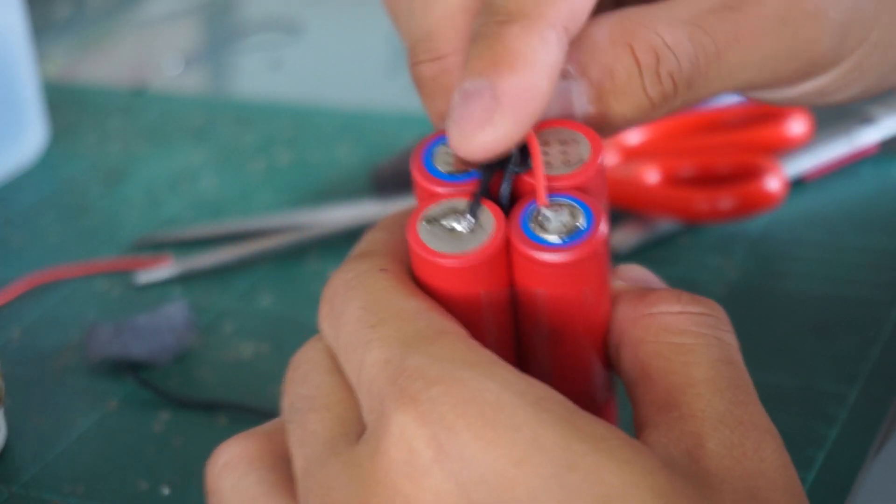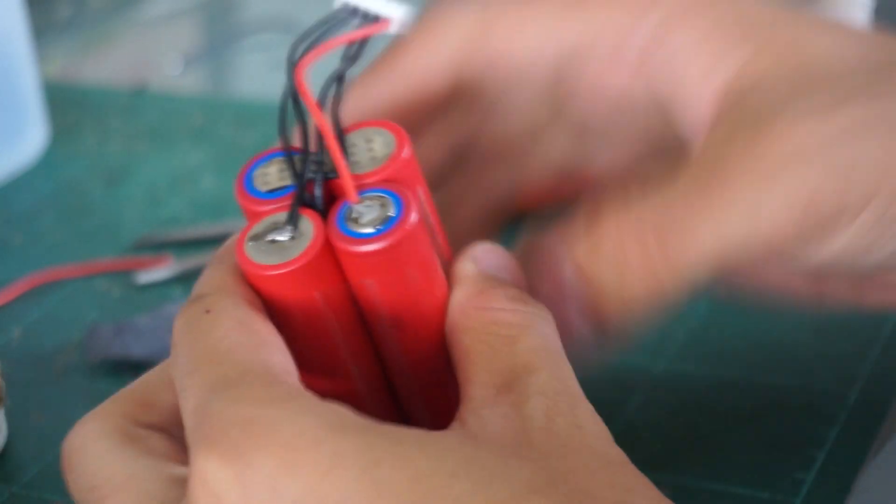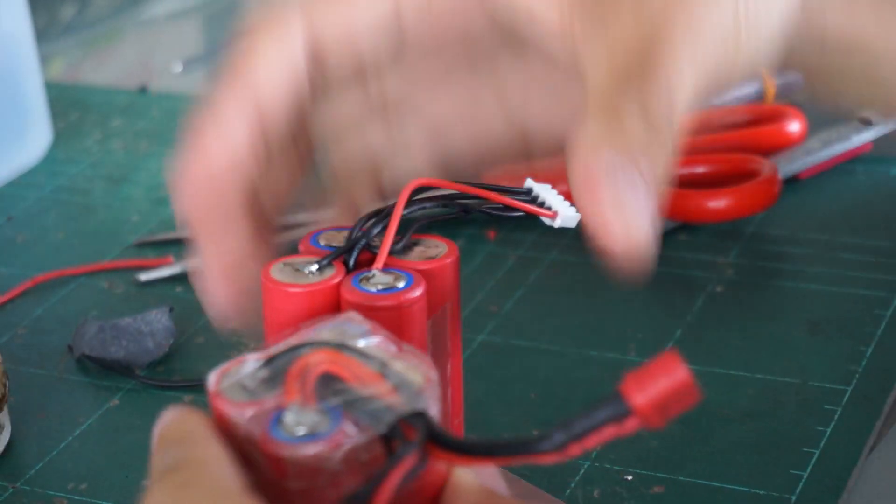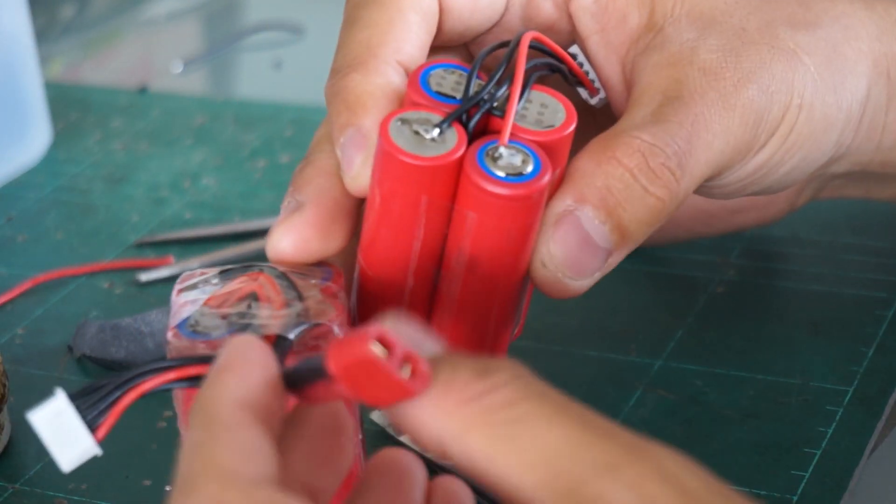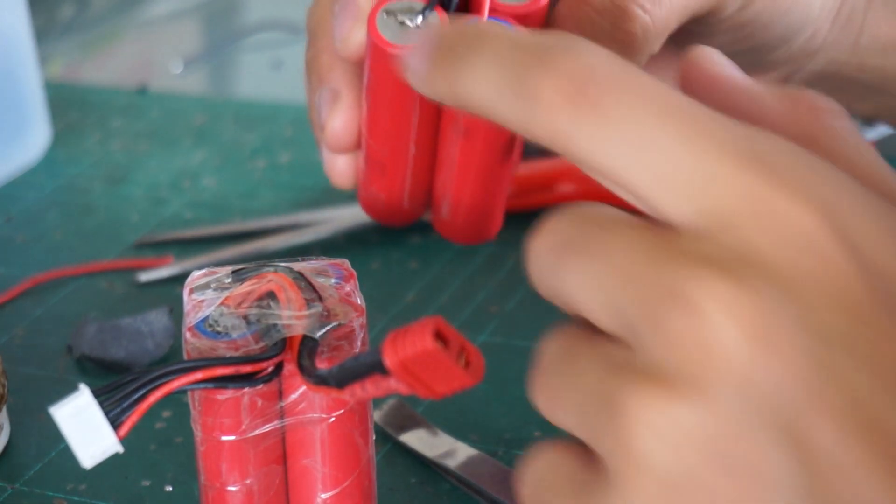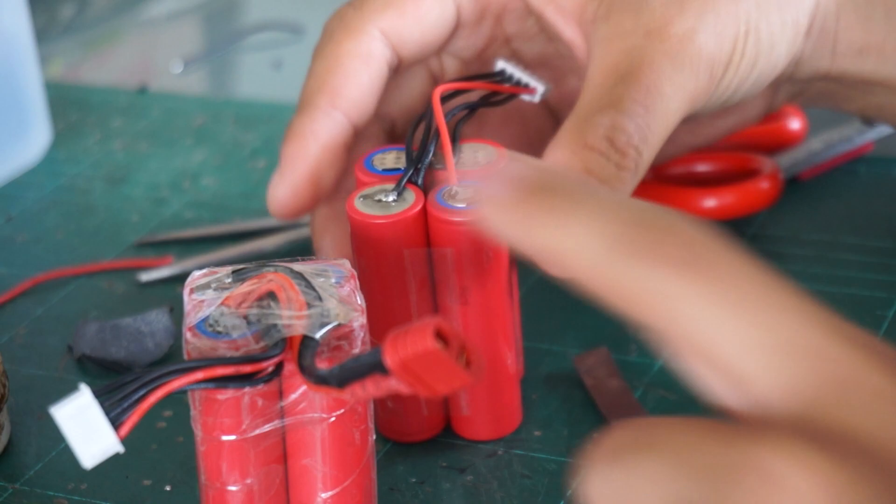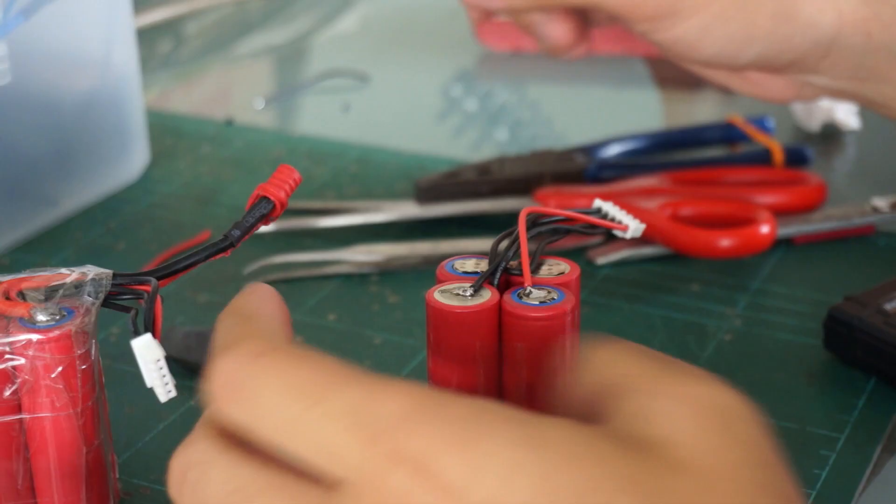Alright, now you're almost done. Just put the main power leads to your four-cell, then you're done with the connector. Positive here, negative here - just like this.